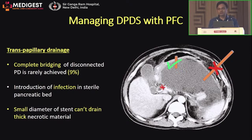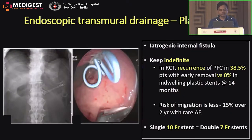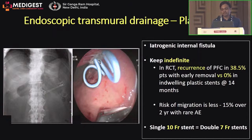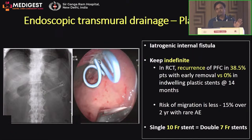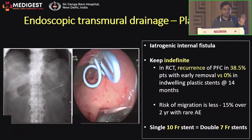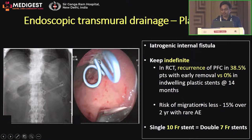The best modality for DPDS associated with fluid collection is transmural drainage using either plastic stents or lumen-apposing metal stents (LAMS). With transmural drainage, an iatrogenic internal fistula is created. Plastic stents should be kept indefinitely or as long as possible, since early removal leads to recurrence of pancreatic fluid collection in up to 38% of cases. Long-term plastic stent placement carries a migration risk of only 15% over 2 years with negligible adverse events. A single 10-French stent works as well as double 7-French plastic stents used at most centers.